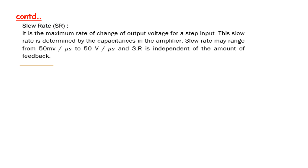The slew rate, abbreviated SR, is the maximum rate of change of output voltage for a step input. The slew rate is determined by the capacitance in the amplifier. It may range from 50 mV/μs to 50 V/μs. The slew rate is independent of the amount of feedback and is considered a most important parameter.